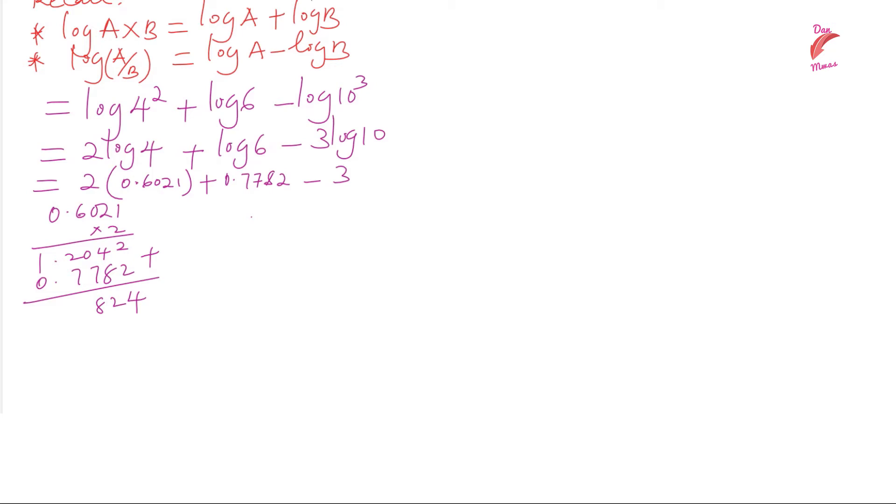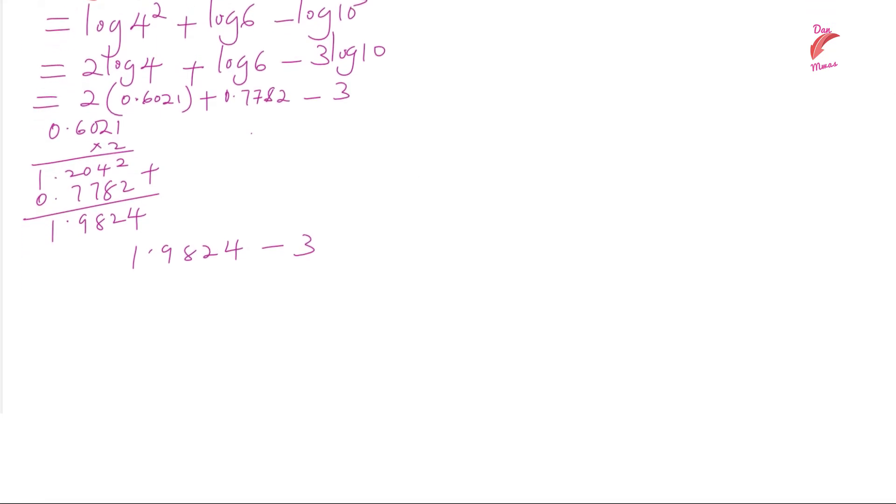So we have 1.9824 minus 3. You can write this one as 3.0000 minus 1.9824.